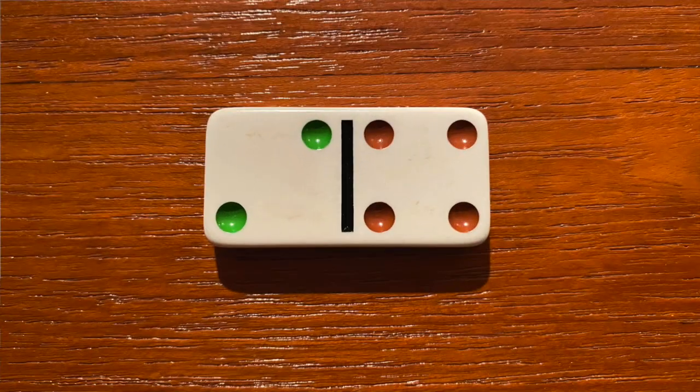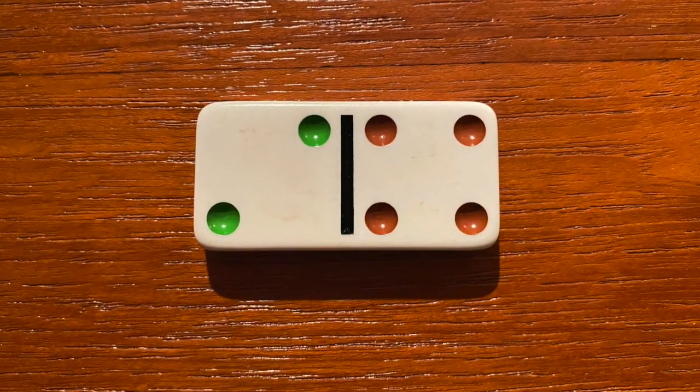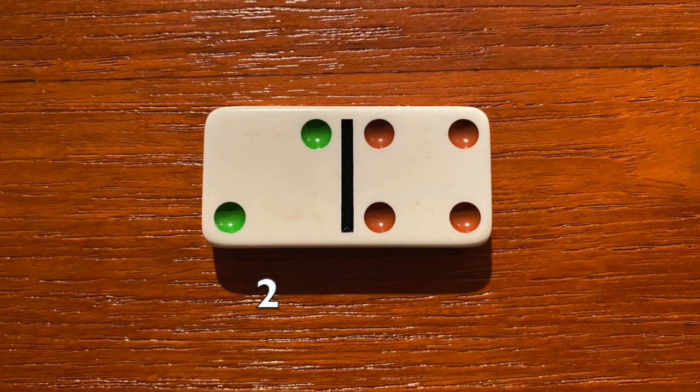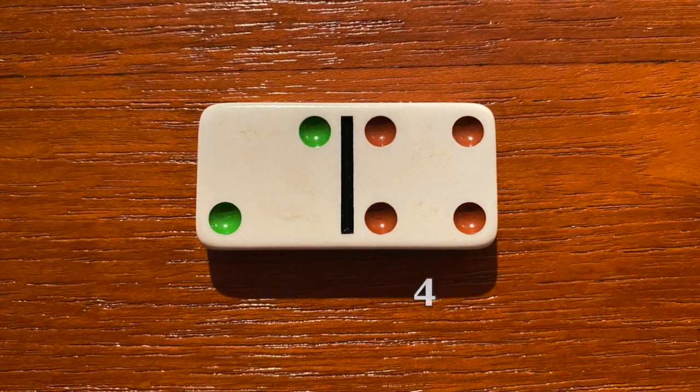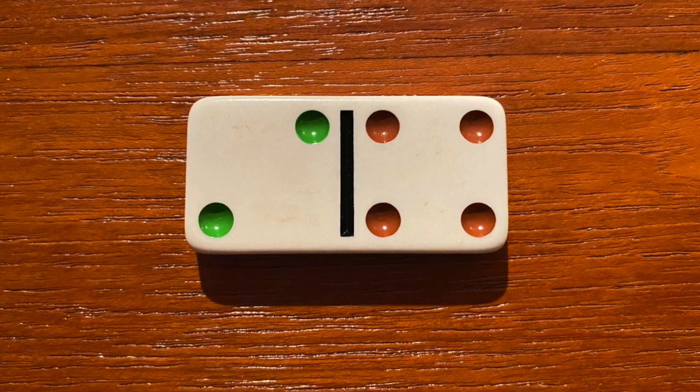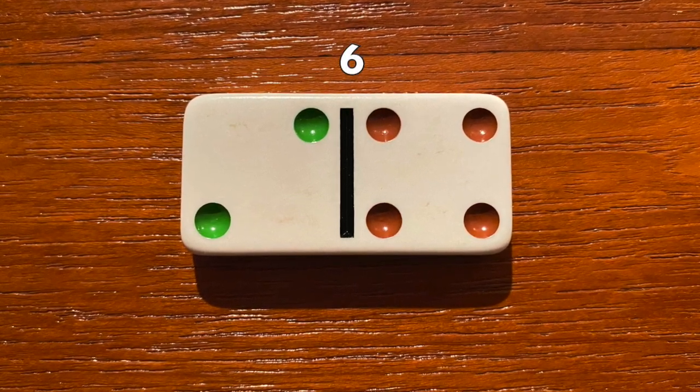I'm going to start by showing you a picture of a domino and I want you to think about how many different numbers you can see on the domino. You may have only seen two numbers on the domino, but if you look again I bet you can see that there are three numbers on the domino. Let me show you: the green dots on the left side show me the number two, the brown dots on the right side show the number four, and if you count all the dots on the domino you can also see the number six.